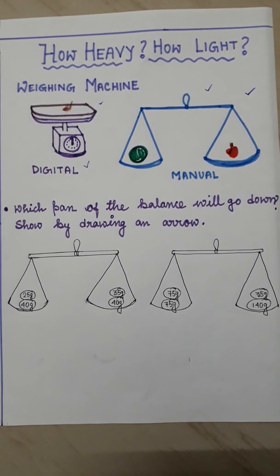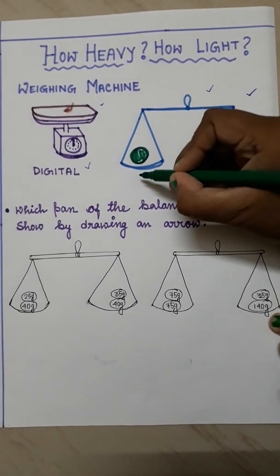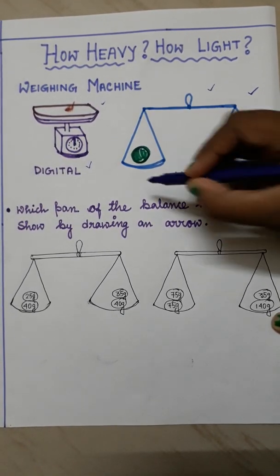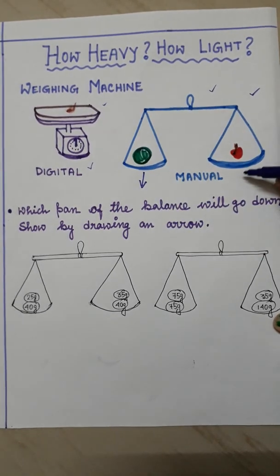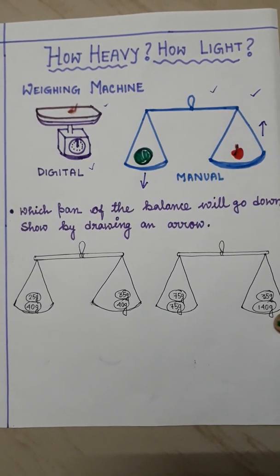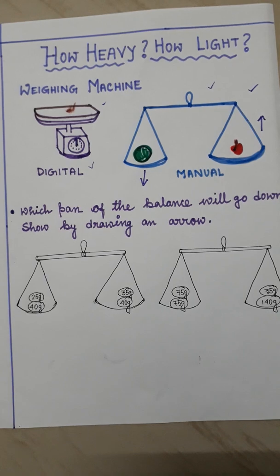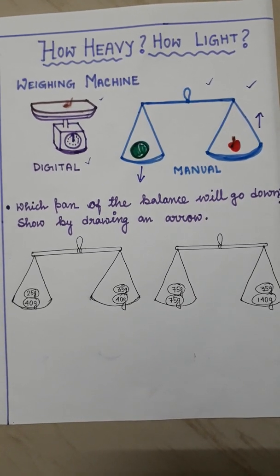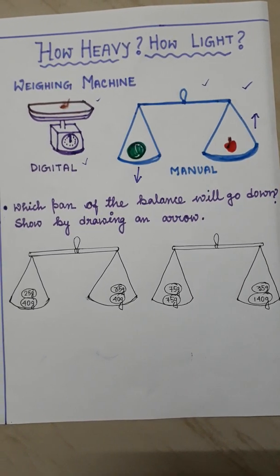When the weight of the watermelon is more, this side will go downward and this side will automatically go upward. This is the main rule of these manual weighing machines.